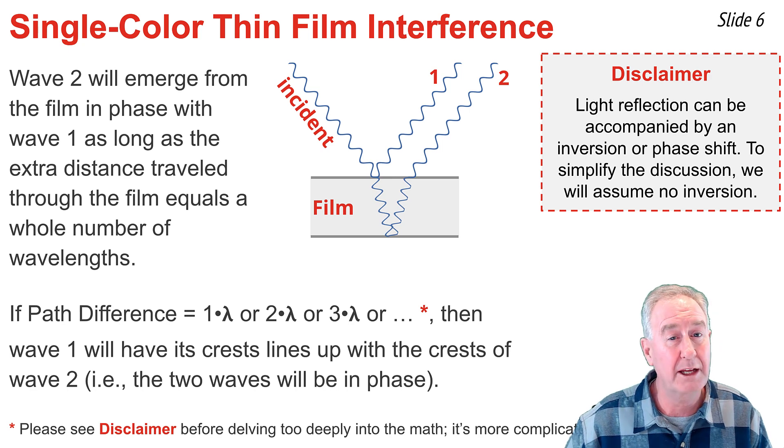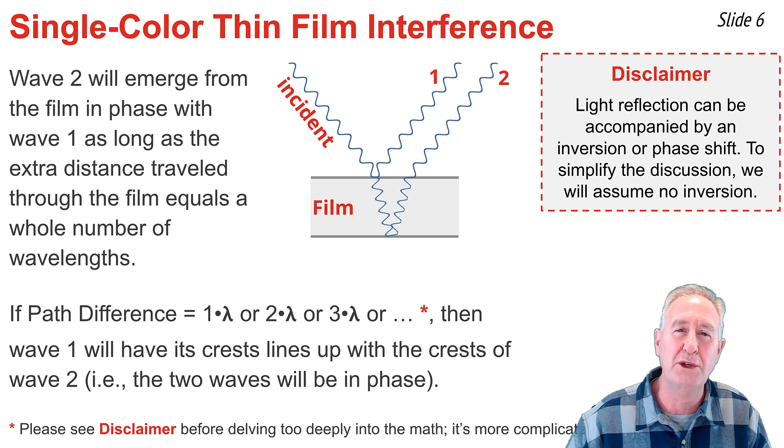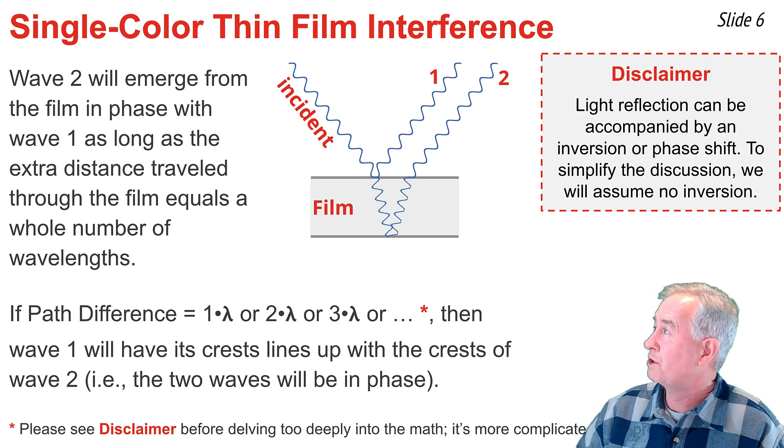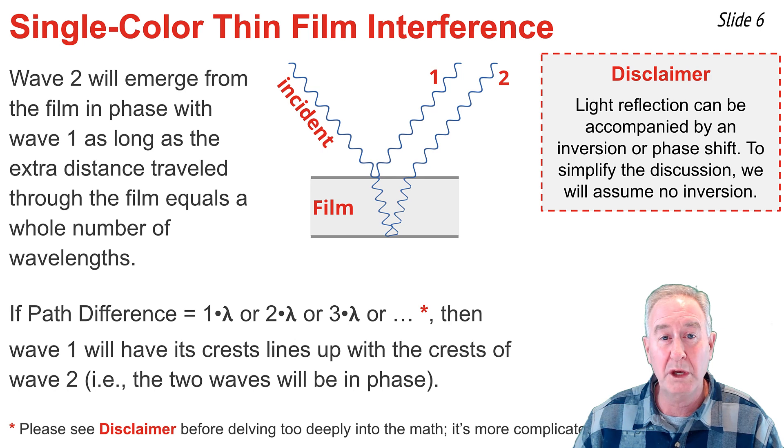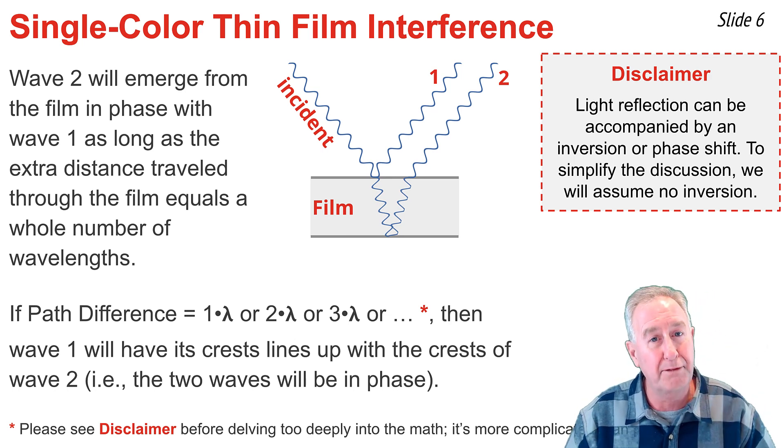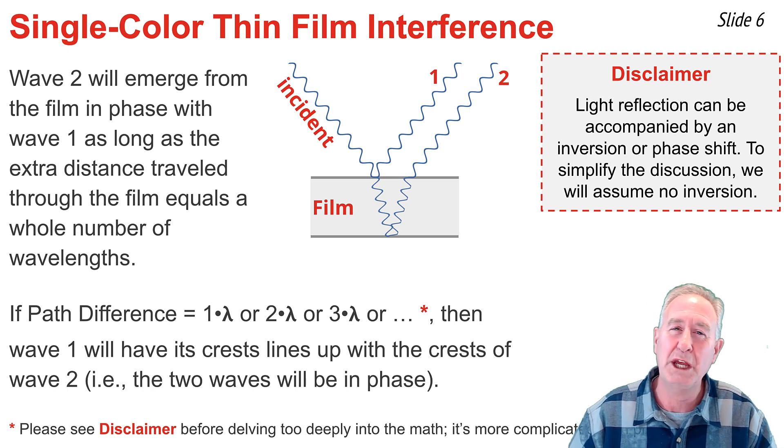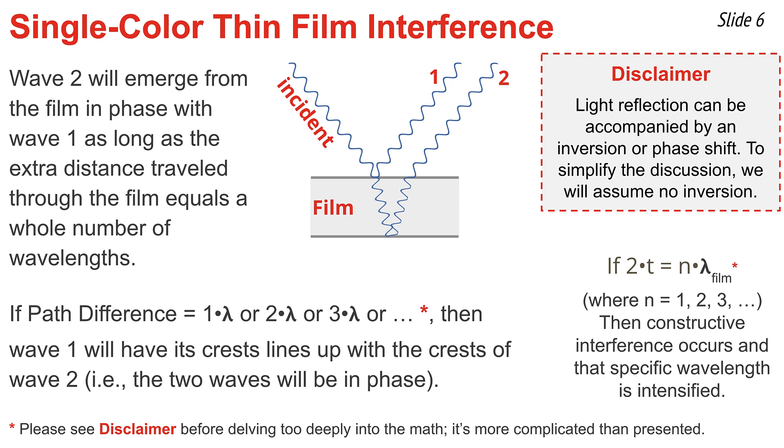So let's consider our logic, beginning again with that statement that if the extra distance traveled by wave 2 is equal to a whole number of wavelengths, constructive interference occurs. So let's ask the question, what's the extra distance traveled by wave 2? Well, wave 2 enters the film and travels down through the film and back up through the film. So the extra distance it travels is equal to twice the thickness of the film. So once more, I'm going to state this as an if-then statement. If 2 times the thickness of the film is equal to n times the wavelength of the light in the film, where n is some whole number, then we would observe constructive interference occurring for that particular wavelength and therefore its color. And that color would be reinforced and intensified and be the color we would see at that particular location in the film.